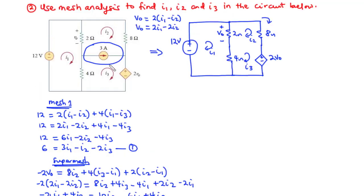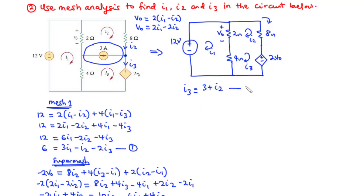Now, back to the original circuit, we apply KCL at the node between mesh 2 and mesh 3. We have current I2 in one branch and current I3 in the other. The sum of current entering equals the sum leaving, so: I3 = 3 + I2. We call this Equation 3.